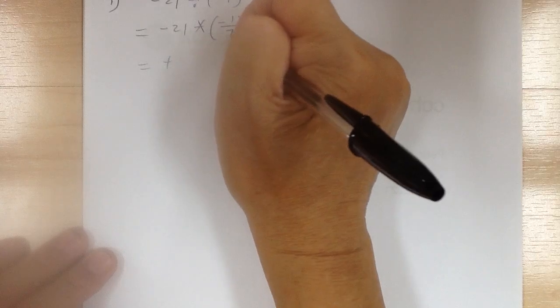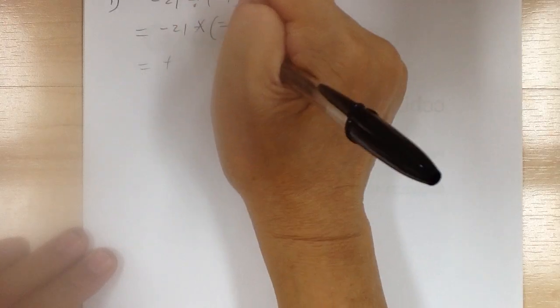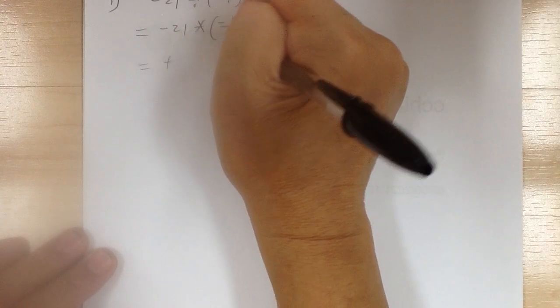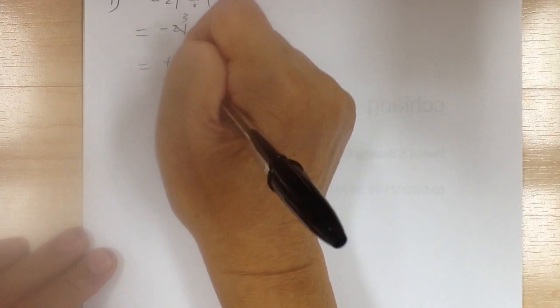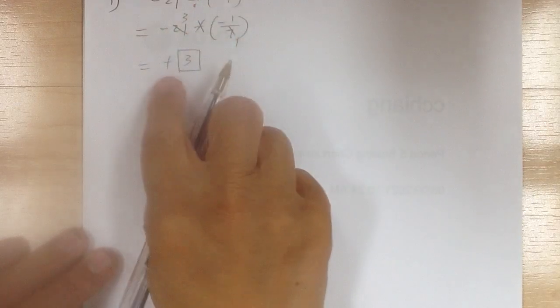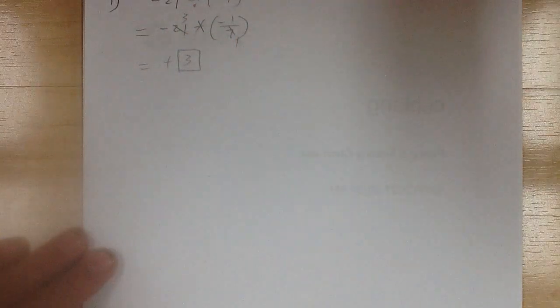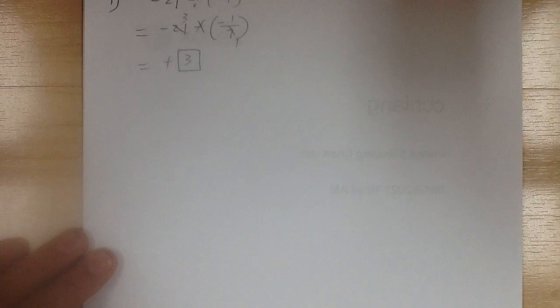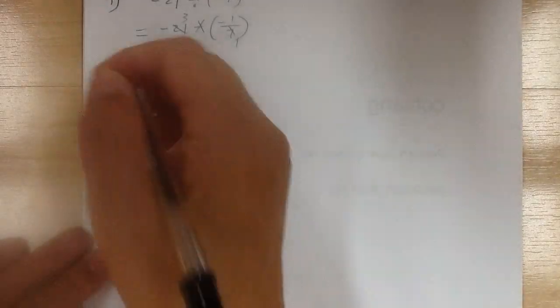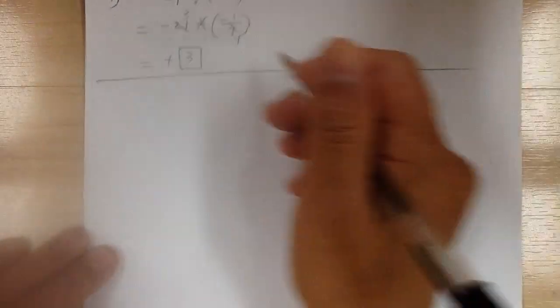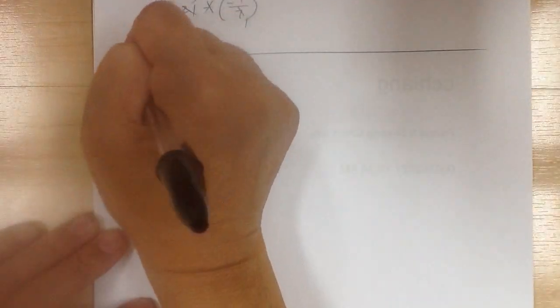So negative times negative is positive, and 7 and 21 — if you divide by 7, you get 1, divide by 7, you get 3 — so the answer will be 3. Don't box the plus sign; this is just showing the steps of how you get the positive.